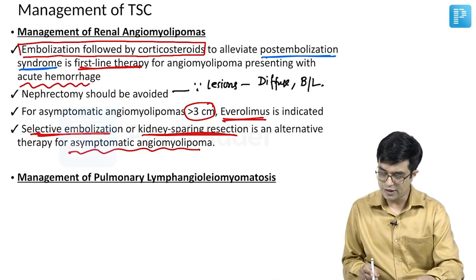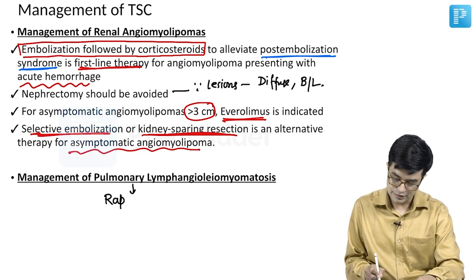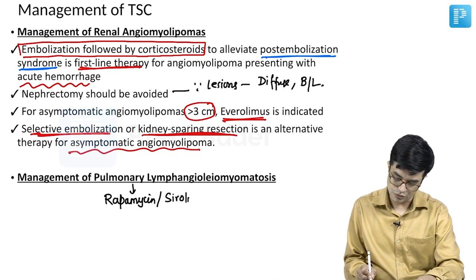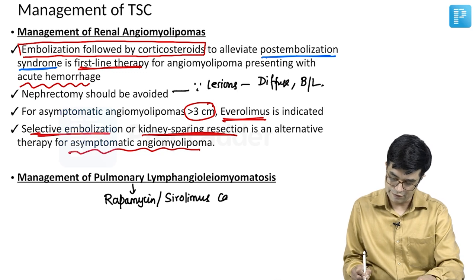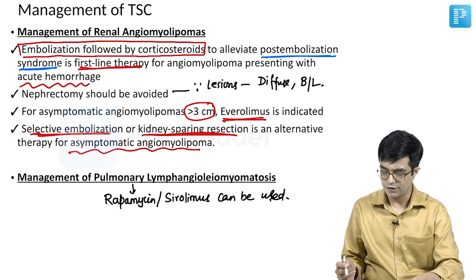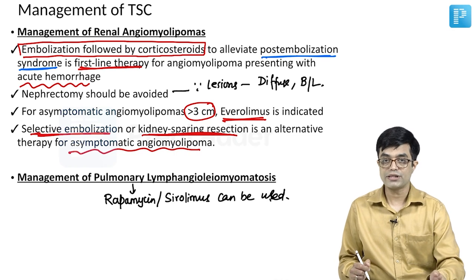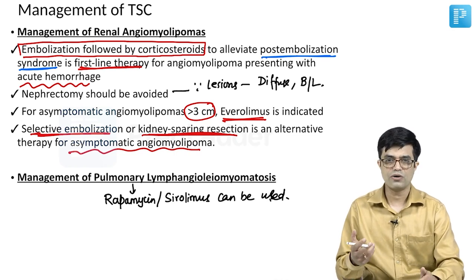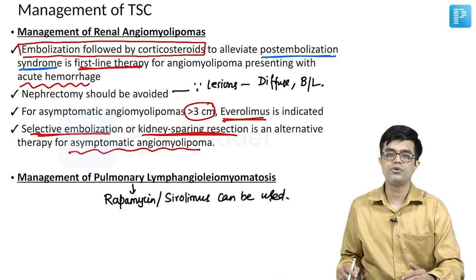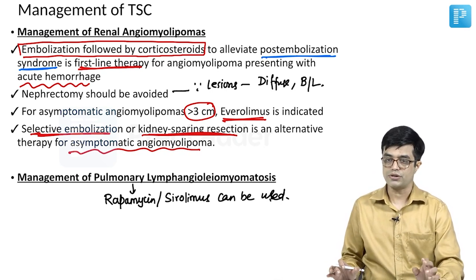For pulmonary lymphangioleiomyomatosis, an mTOR inhibitor called rapamycin (sirolimus) can be used. Although everolimus has been studied, rapamycin or sirolimus is preferred for this category of patients. For skin lesions, hypomelanotic patches generally do not require therapy, though topical rapamycin can be used if desired.